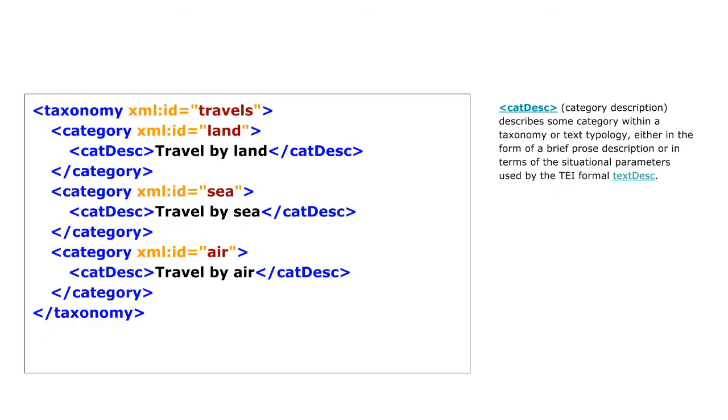I'm not done yet with the categories. I can add a catDesc — category description — element to each of them, to describe in full text what this type of travel is: travel by land, by sea, by air. And if I wish to do so, I can also nest categories, one within the other.